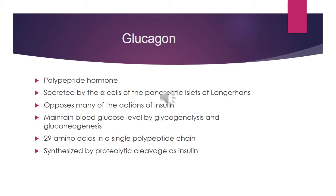Glucagon is a 29 amino acid polypeptide hormone. It is synthesized similarly to pro-insulin and insulin — the biosynthesis pathway is very similar — starting from a precursor form.